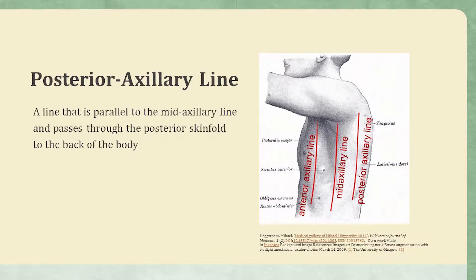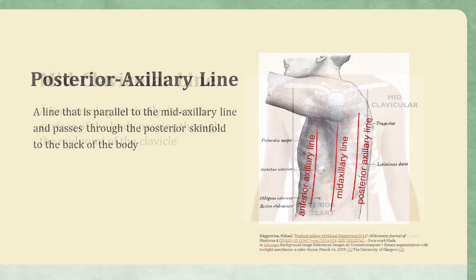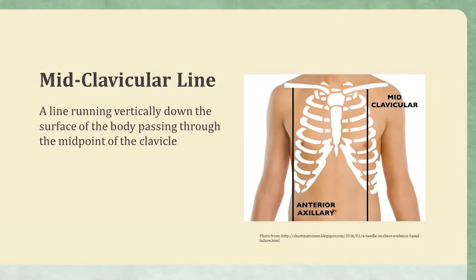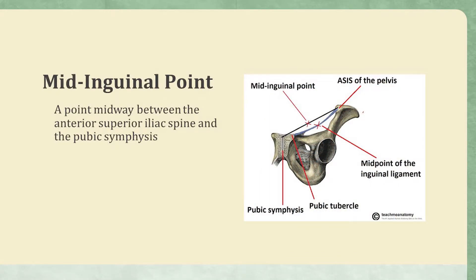The posterior axillary line is a line that is parallel to the midaxillary line and passes through the posterior skin fold to the back of the body. The midclavicular line is a line running vertically down the surface of the body, passing through the midpoint of the clavicle. The midinguinal point is a point midway between the anterior superior iliac spine and the pubic symphysis.